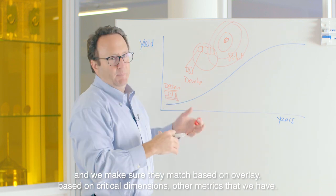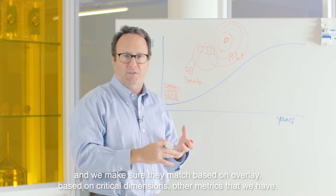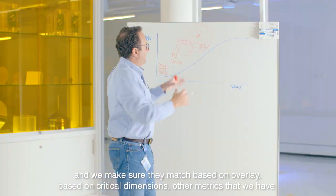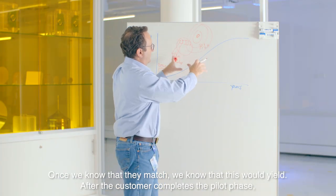We make sure they match based on overlay, based on critical dimensions, and other metrics that we have. Once we know that they're matched, we know that this will yield.